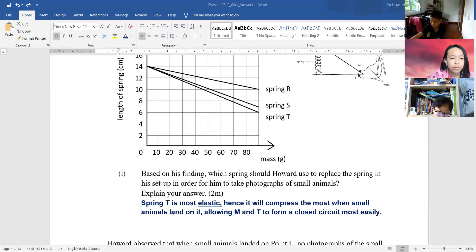Yes, thank you. So again I highlight to you what the examiner looks for. It firstly must identify the correct spring, spring T. It is the most elastic. So what does most elastic mean? Most elastic means it will compress the most when the same mass or when small animals land allowing M and T to form a closed circuit most easily.